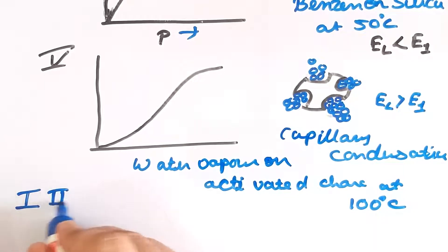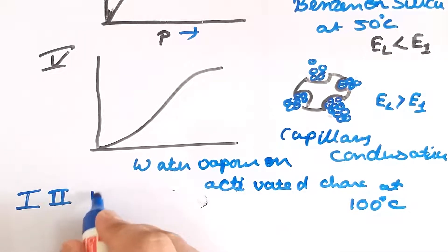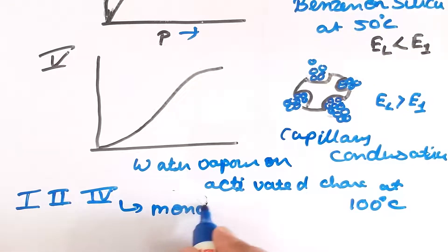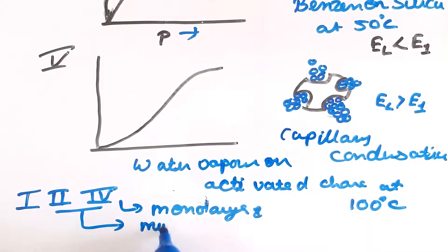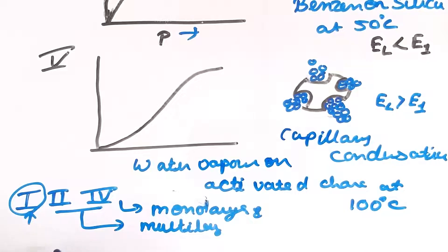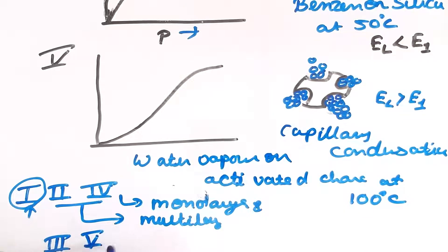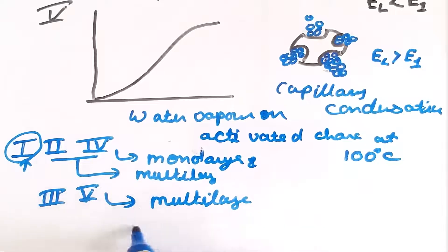In summary: in Types 1, 2, and 4, monolayer formation occurs first. In Type 1 only monolayer forms; in Types 2 and 4, monolayer forms first followed by multilayer formation. In Types 3 and 5, multilayer formation takes place directly without a monolayer. In Types 4 and 5, the phenomenon of pore condensation is observed, as the adsorbent is a porous material.